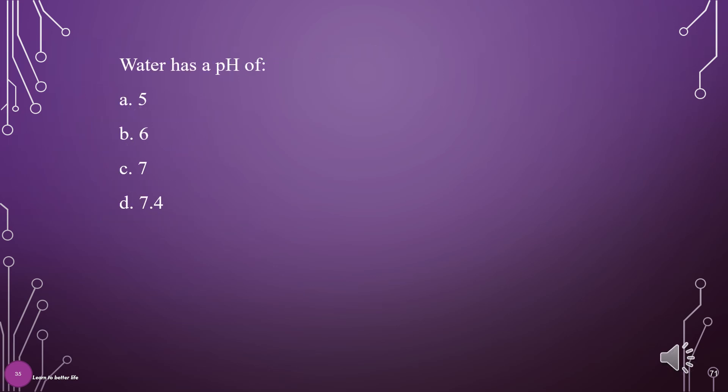Water has a pH of: A. 5, B. 6, C. 7, D. 7.4. The answer is C: 7.